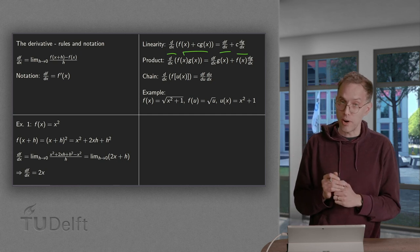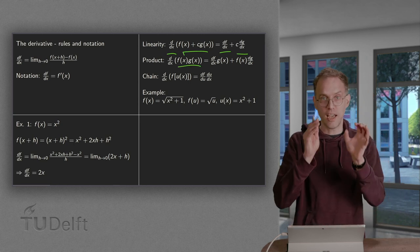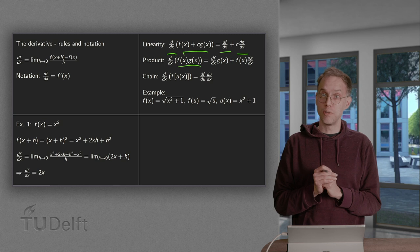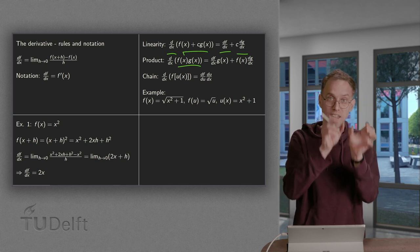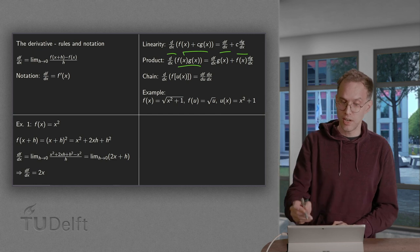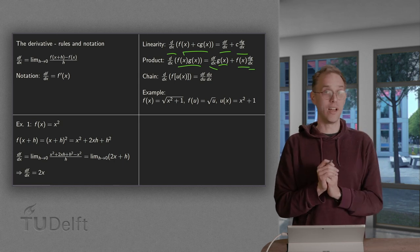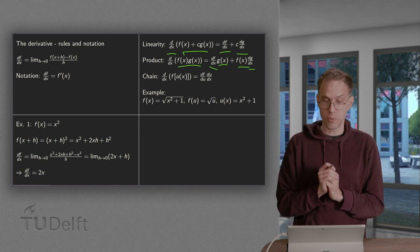And we have the product rule. It says if you have the product of two functions f times g and we want to compute its derivative, so the d/dx of fg. What do we need to do? Differentiate f times g plus leave f and differentiate g. You may recognize the product rule from high school.